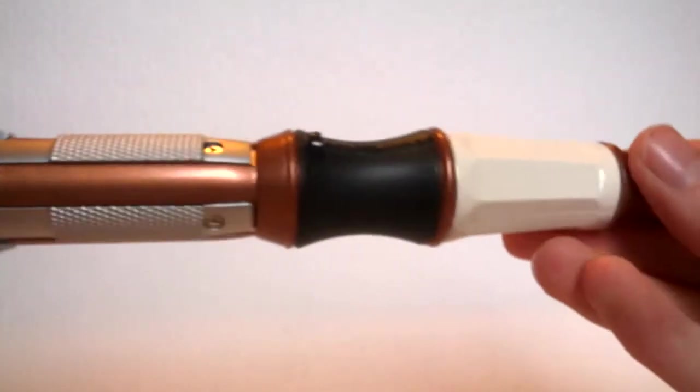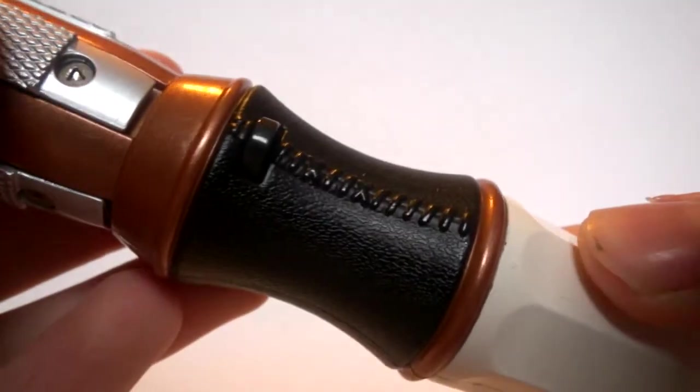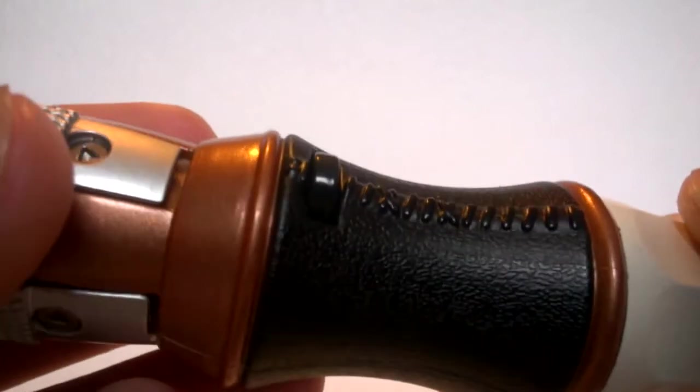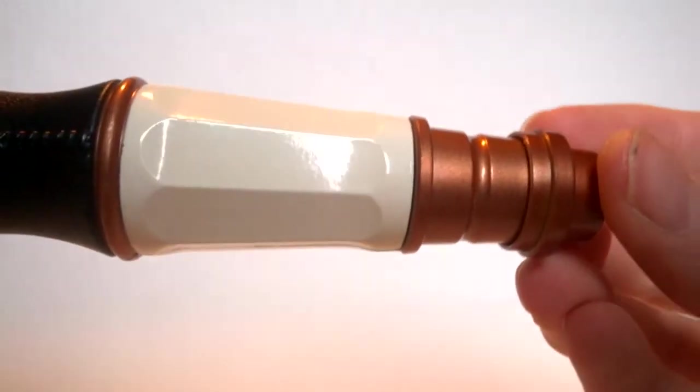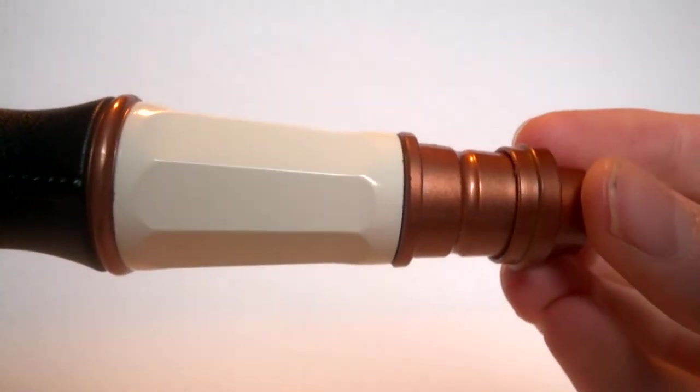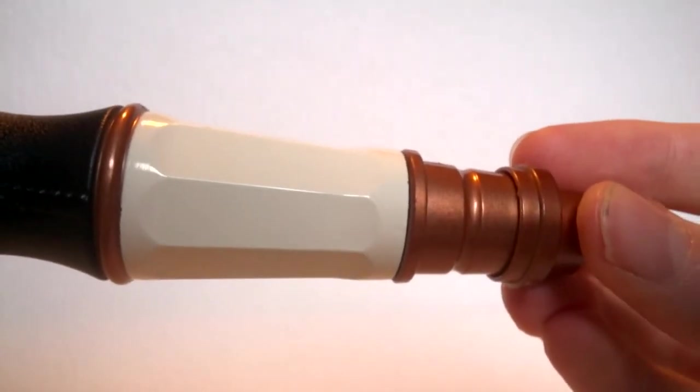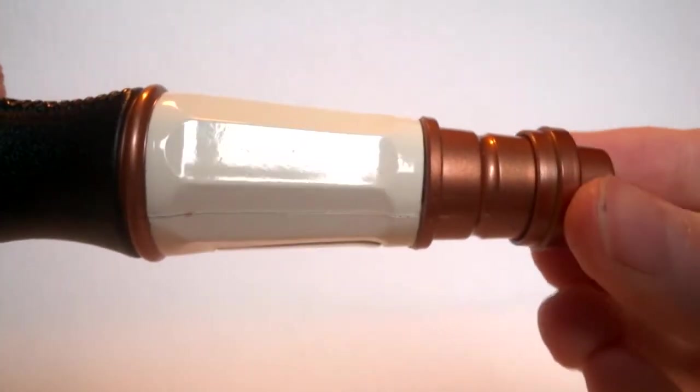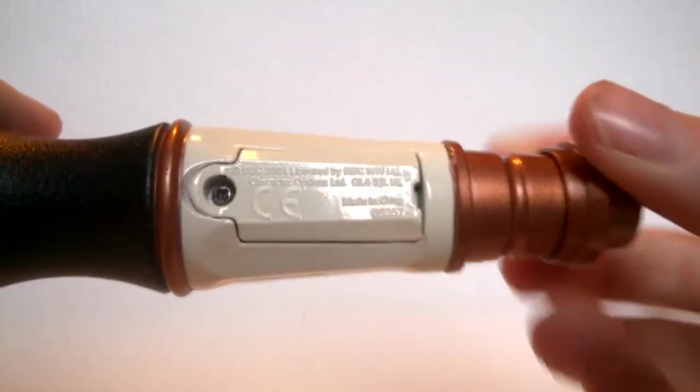This basically takes on the programming from the single button version but makes it slightly better. We have the extendy button there which makes it extend. And then going down to the bottom of the handle of the Sonic Screwdriver, exactly the same sculpt. We've just got this standard white bit that I always think is pretty bland really on these. It's just really gold at the bottom there. And then we have the ugly battery compartment.